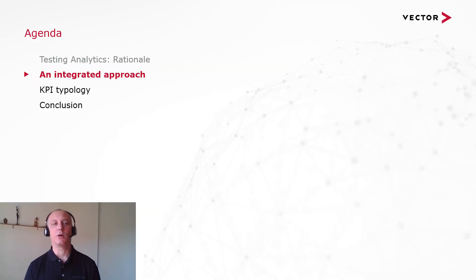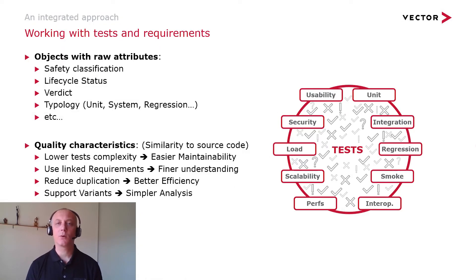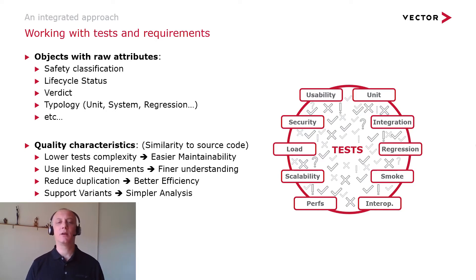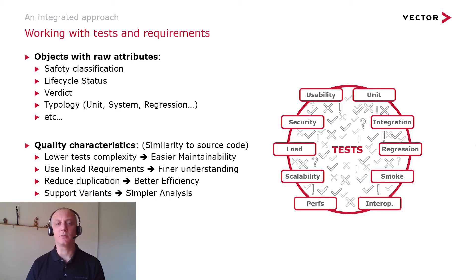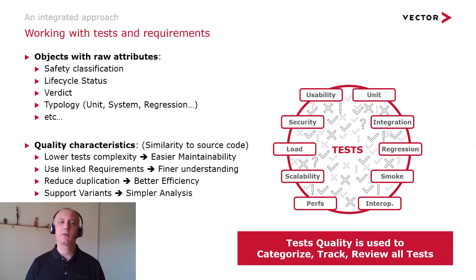Now let's look at the overall approach. We are working with tests and requirements — objects with attributes such as safety classifications, lifecycle status, verdict, typology, and so on. We use these attributes to create quality characteristics, very similar to what we do with source code. The quality characteristics break down into sub-characteristics such as maintainability, efficiency, and reliability. We clearly understand that if a test is not complex, it will be easier to maintain. We use these quality characteristics to rate, track, and review all objects.